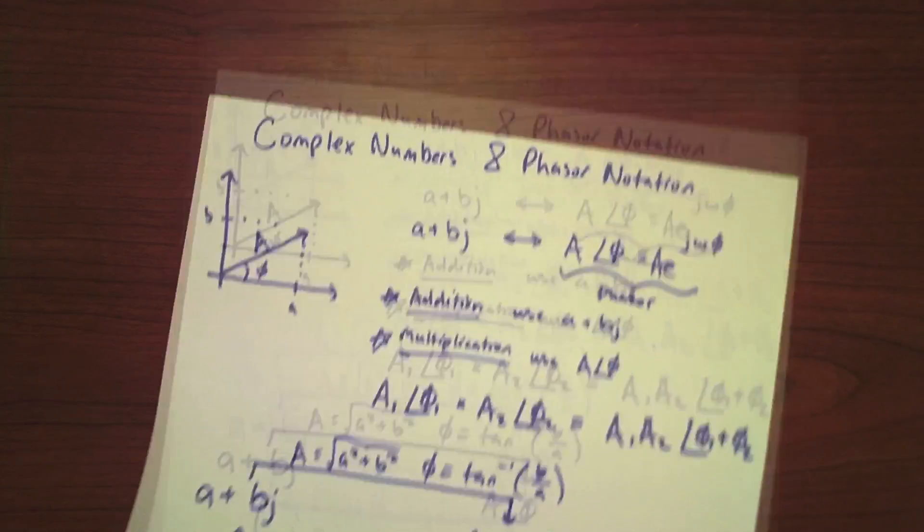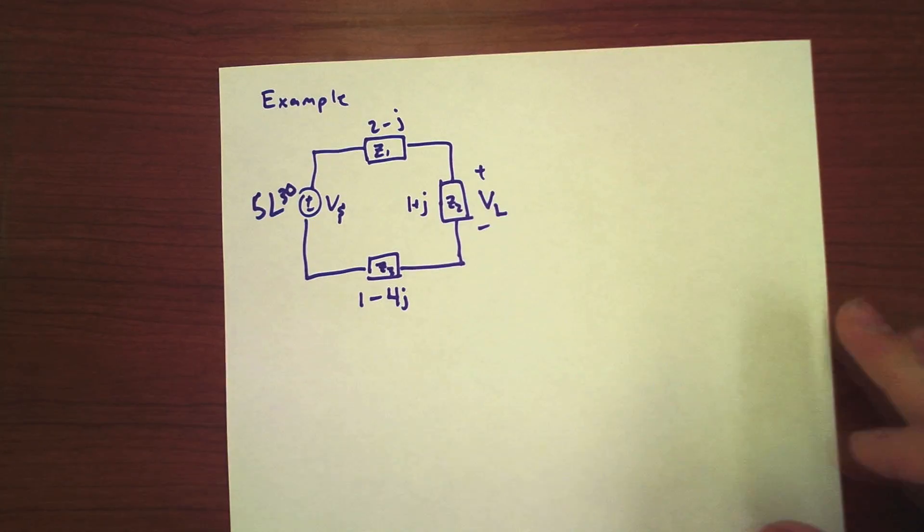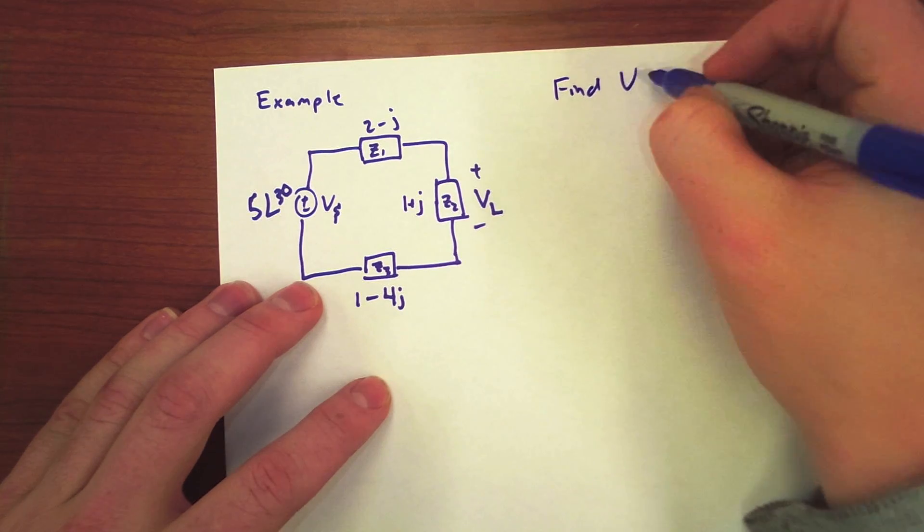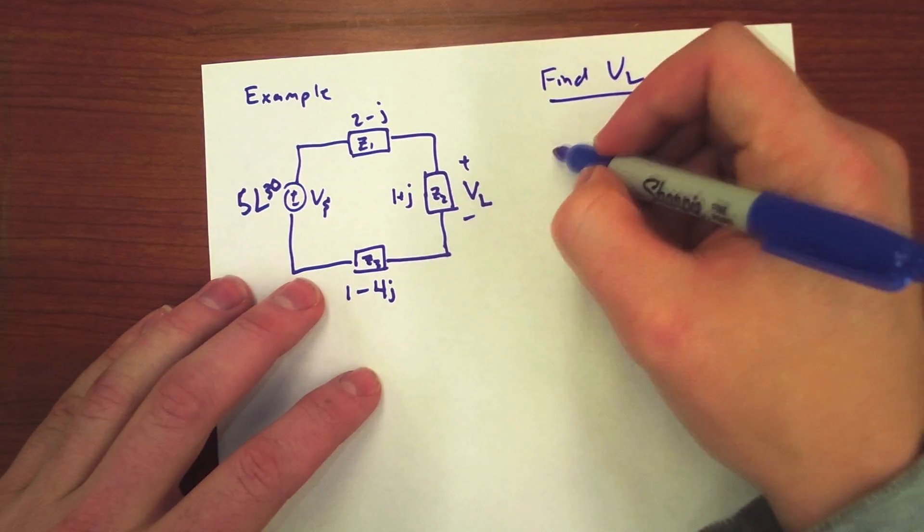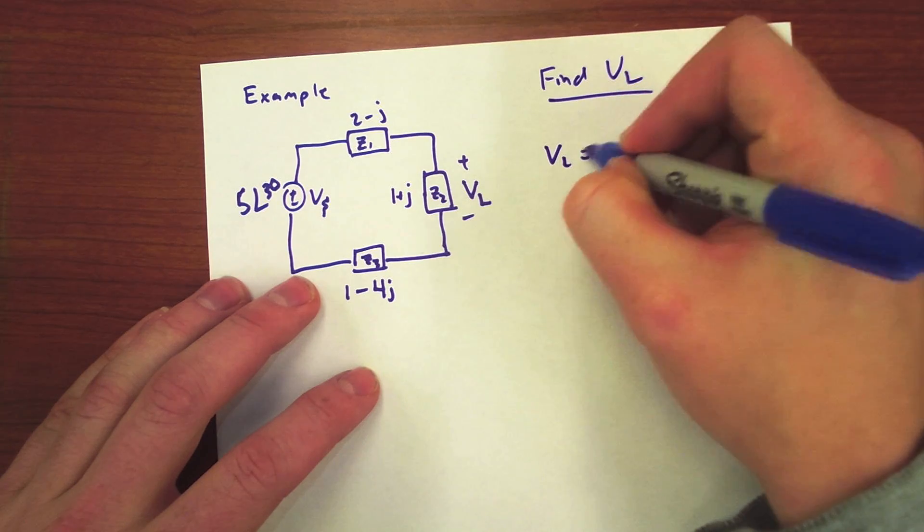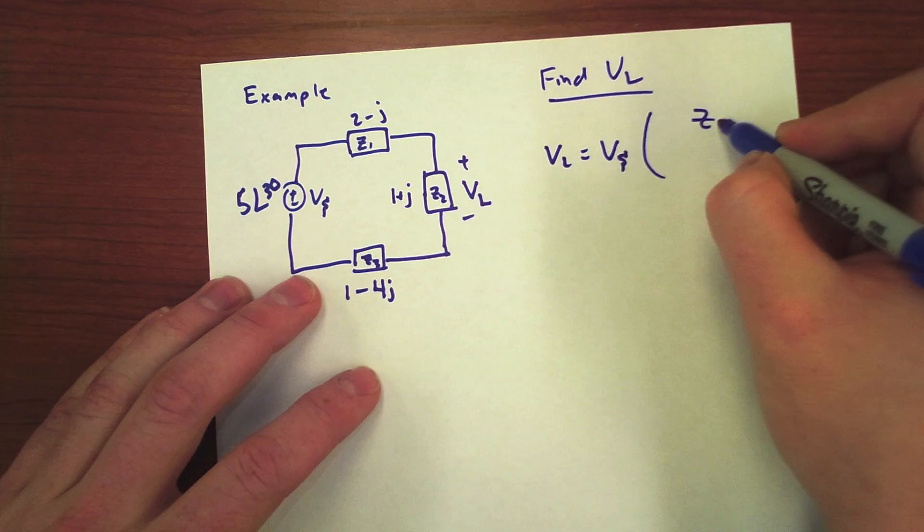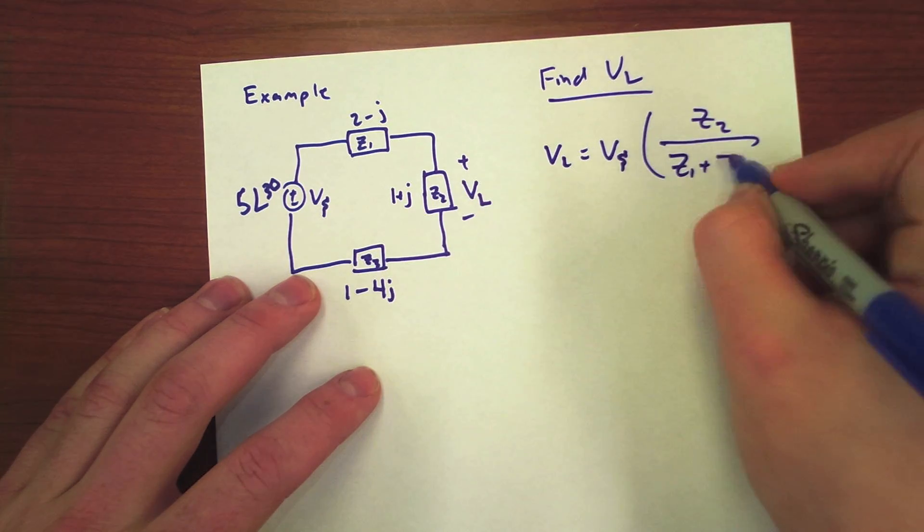Alright, let's move on to a little more involved example. We're going to try to find VL. And to do that, we know that VL is equal to VS times Z2, our impedance over 2, over the sum of all the impedances.